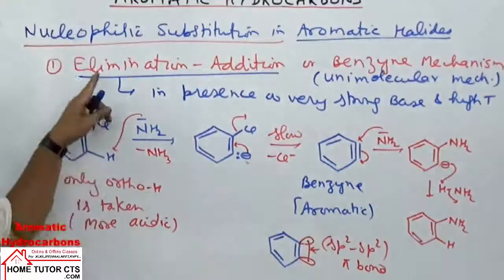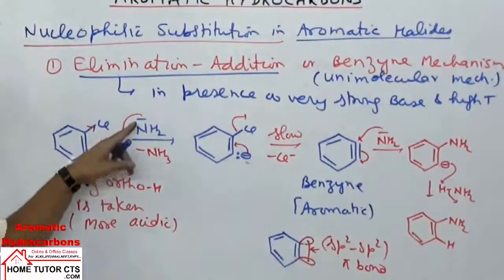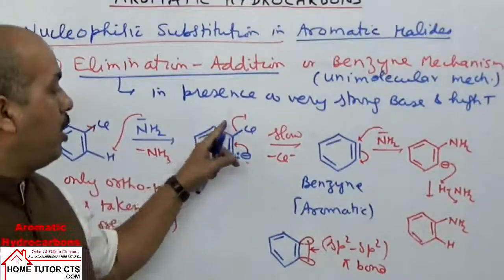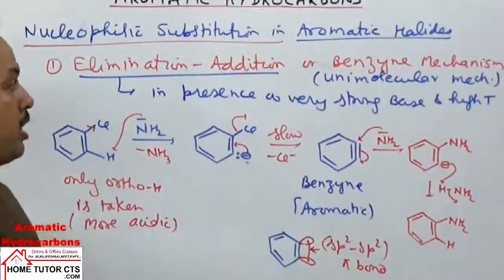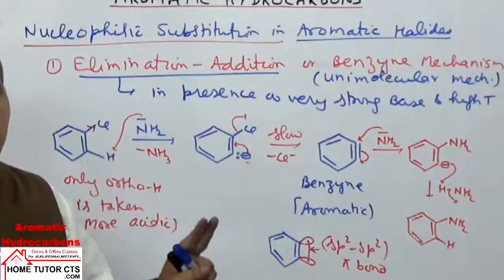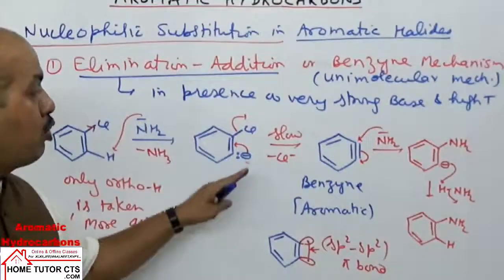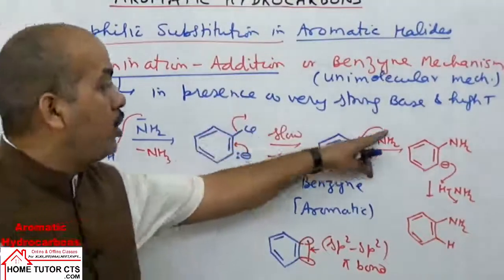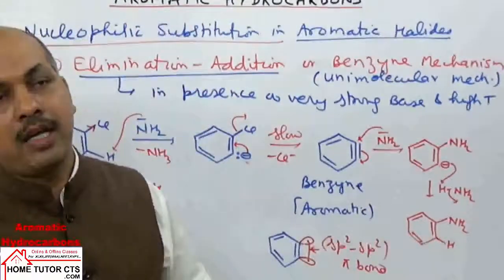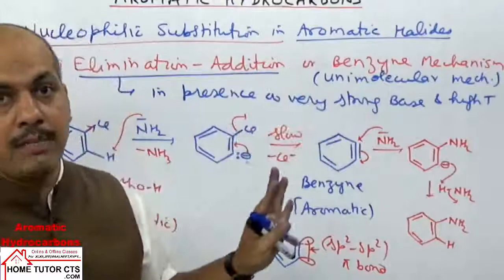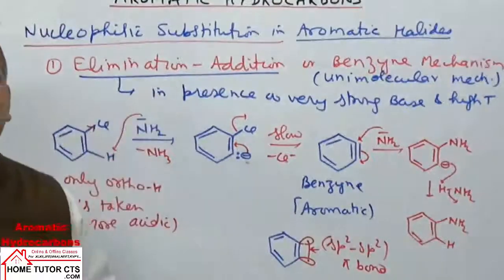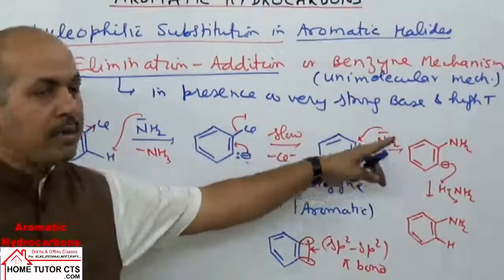This reaction is called the elimination-addition mechanism. The first two steps are the elimination steps (removal of H and loss of Cl−), and the next two steps are the addition steps (attack of nucleophile and protonation). So it is called elimination-addition mechanism, with benzyne as the intermediate.